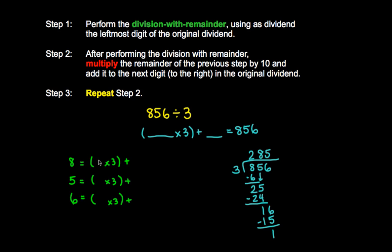I perform division with remainder. Step 2 says: after performing division with remainder, multiply the remainder of the previous step by 10. The remainder is 2, so 2 times 10 gives us 20. Then add it to the next digit to the right in the original dividend. The next digit is 5, so I add 20 to 5, and I get 25.